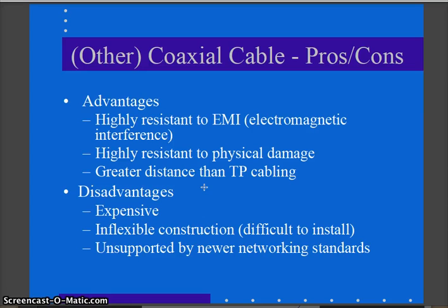Pros and cons of coax: it is highly resistant to EMI because of the shielding, highly resistant to physical damage, and has greater distance capabilities than twisted pair — which is one reason it's still used for ISP connections to your house. Disadvantages include higher cost, less flexibility than other media, and the fact that networking standards do not support it for use inside a building to connect networking closets. It's acceptable from the ISP to your house, but not inside the building.